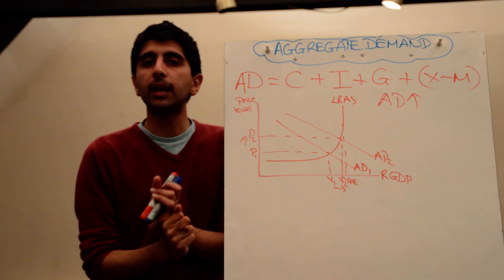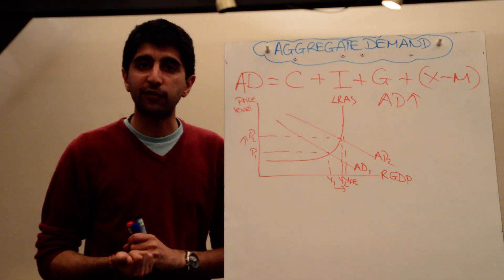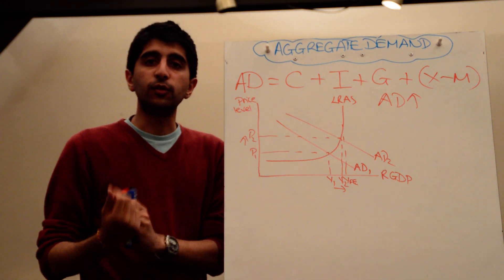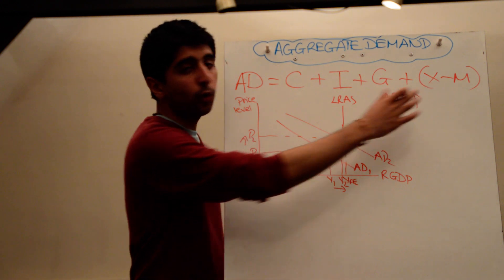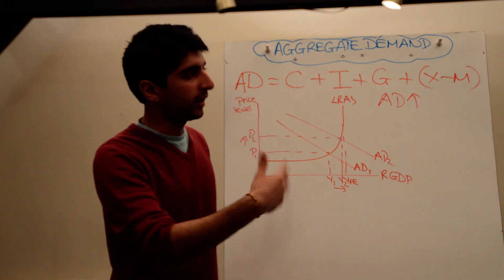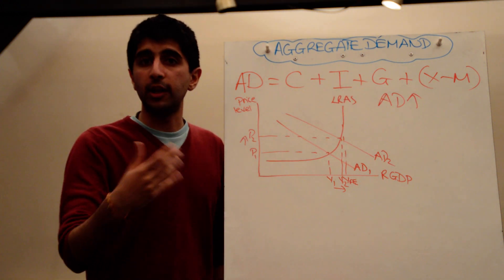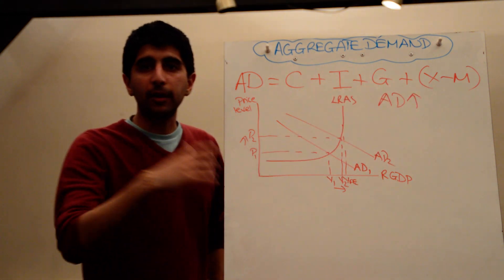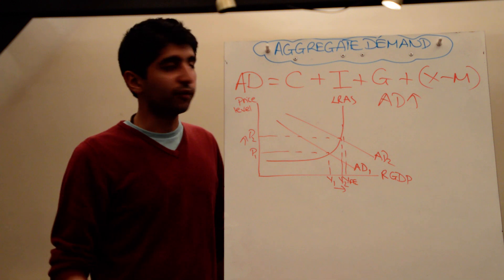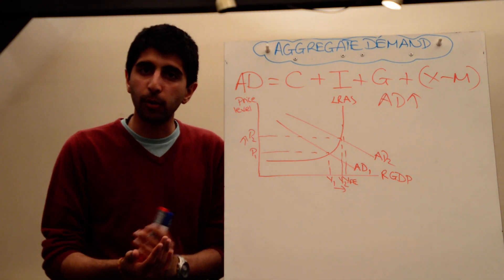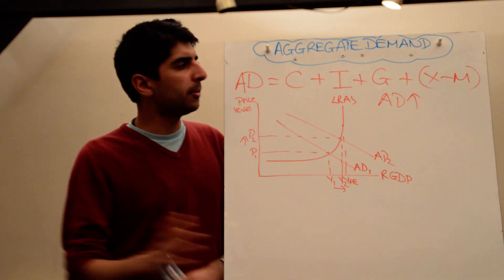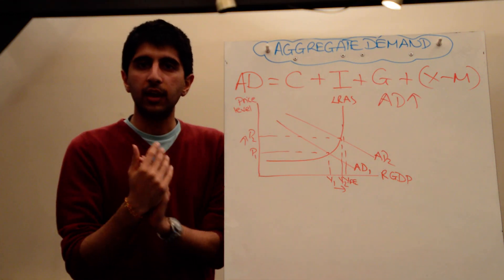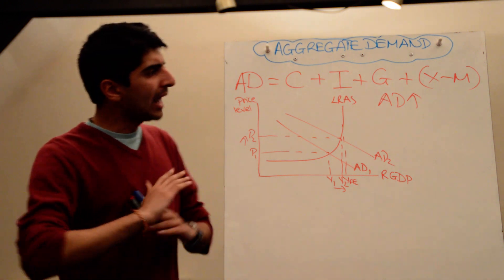Maybe there is a rise in incomes abroad, which increases demand for exports. Maybe there is a fall in incomes at home, which reduces spending on imports. Maybe there is a fall in the exchange rate, which will increase aggregate demand. If you don't understand that, watch my video on exchange rate impacts. Maybe there is a reduction in government restrictions on free trade, which makes it easier to export. Maybe there is an increase in international competitiveness, which makes exports in the domestic country cheaper.